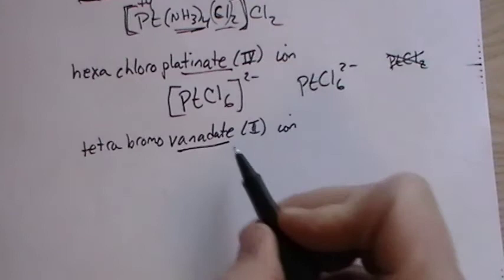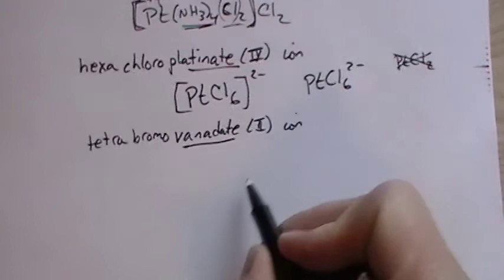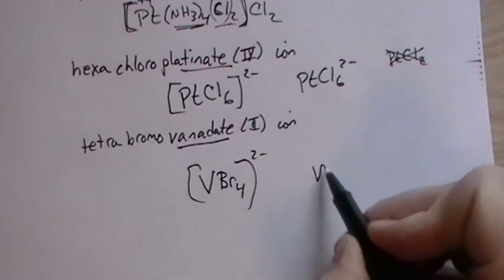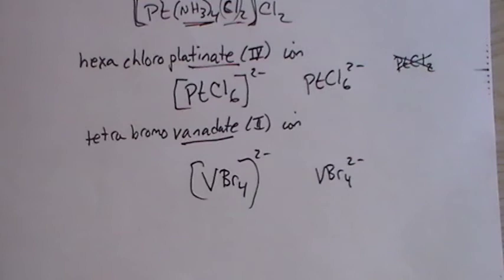Tetrabromovanidate. So that one is a little trickier. Vanidate, what would that be? Vanadium, and it's -ate, so that must mean that it ends with a negative sign. Tetrabromo, it's going to be a minus two again. And there's really no confusion if you do that as well.